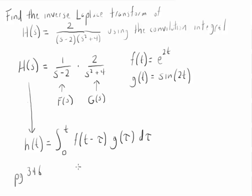But let's write out what that's going to look like. In our example, we're going to have the integral from 0 to T of E to the twice T minus tau times G of tau. That is sine of 2 tau d tau. And if I can evaluate this integral, I can find H of T.